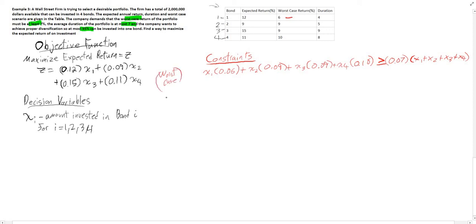Now we have to do the proper duration. So we're going to have x1 times the duration there plus x2 times the duration there plus x3 times the duration of bond 3 plus x4 times the duration of bond 4 has to be less than or equal to 7. And of course, in order to get this properly, we're going to have to multiply this by the total on this side. And that's going to give you your duration.